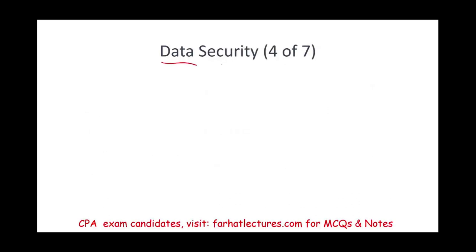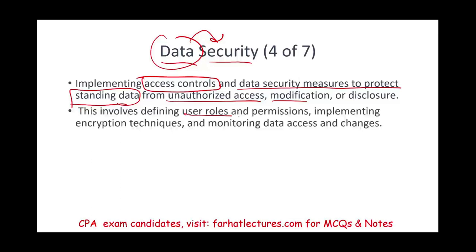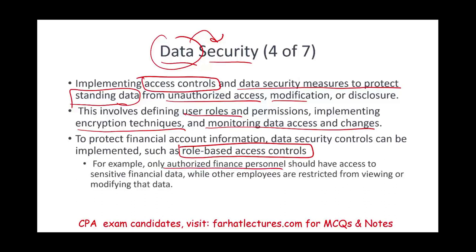Data security is critically important — combining data and cybersecurity makes it even more so. This involves implementing access controls and security measures to protect standing data from unauthorized access, modification, or disclosure. It includes defining user roles, who's responsible for what and who can access what, implementing encryption techniques, and monitoring data access and changes. For example, role-based access control ensures only authorized finance personnel can view or modify sensitive financial data, while other employees are restricted.